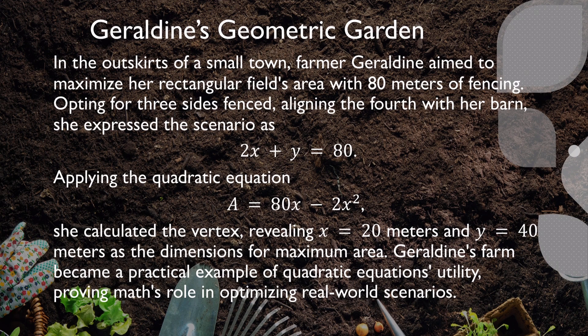Gerardine's Geometric Garden. In the outskirts of a small town, Farmer Gerardine aimed to maximize her rectangular field's area with 80 meters of fencing. Opting for three sides fenced and aligning the fourth with her barn, she expressed the scenario as an equation. Applying the quadratic equation, she calculated the vertex, revealing x equal to 20 meters and y equal to 40 meters as the dimensions for maximizing the area. Gerardine's farm became a practical example of a quadratic equation's utility in optimizing real-world scenarios.